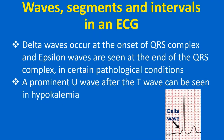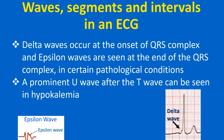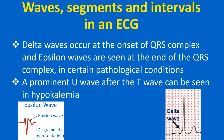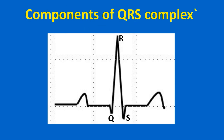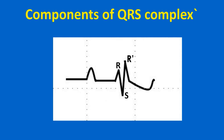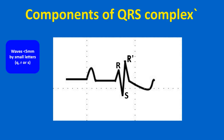Delta waves occur at the onset of the QRS complex and epsilon waves are seen at the end of the QRS complex in certain pathological conditions. A prominent U wave after the T wave can be seen in hypokalemia. An initial negative deflection which is part of the QRS complex is called a Q wave; an initial positive deflection is named the R wave; a negative deflection following an R wave is called the S wave. A second positive deflection is termed R-prime wave, and if there is a negative deflection after R-prime, it is called S-prime wave. Waves less than 5 mm amplitude may be designated by small letters.